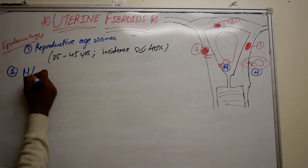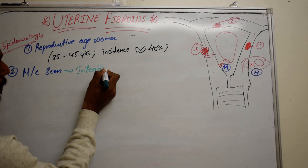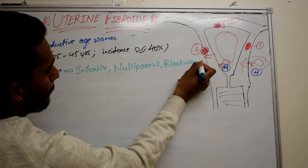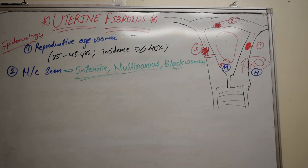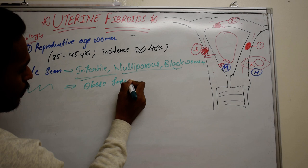Uterine fibroids are most commonly seen in infertile, nulliparous women of African race. They are also commonly seen in obese females, where the chances of getting fibroids are very high.